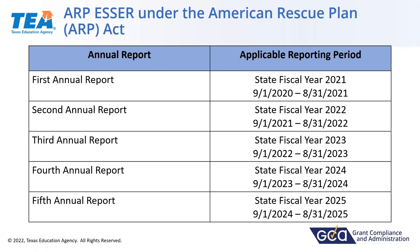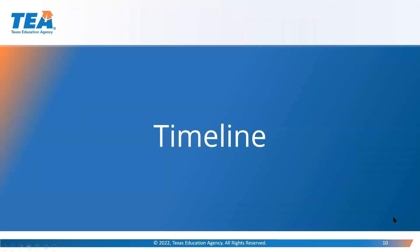We know that some of this looks different and you may not have been tracking some of your activities exactly the way this report asks. USDE has been working on this report for a year — they've changed the data elements, collected public comment, made more changes. We don't know exactly what the final version of this report may look like yet. We have a pretty good idea at this point, and that's why we're sharing this information, because you are going to have a short timeline on this current year report.